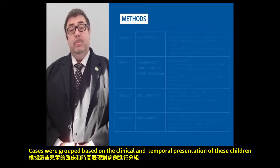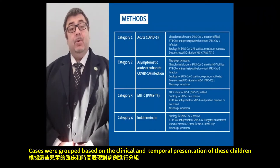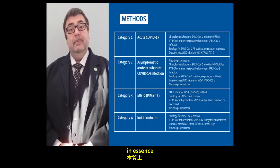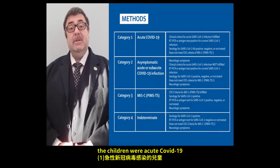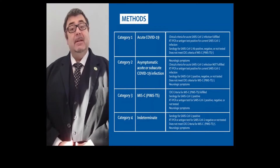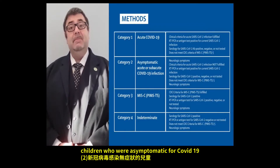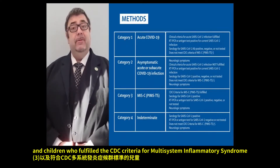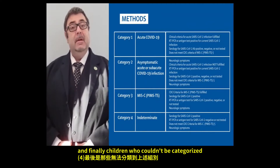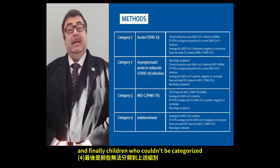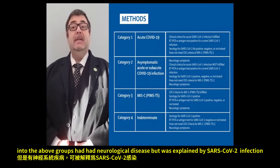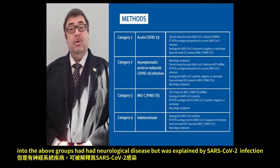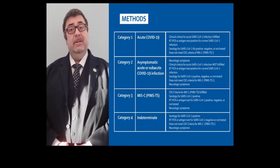Cases were grouped based on the clinical and temporal presentation of these children: children with acute COVID-19, children who were asymptomatic for COVID-19, children who fulfilled the CDC criteria for multisystem inflammatory syndrome, and finally children who couldn't be categorised into the above groups but had neurological disease explained by SARS-CoV-2 infection.